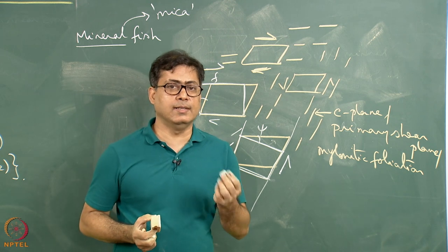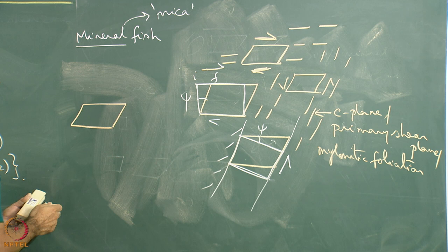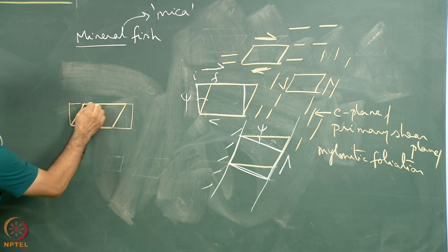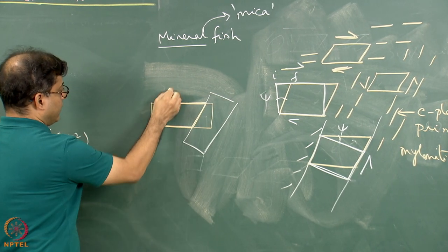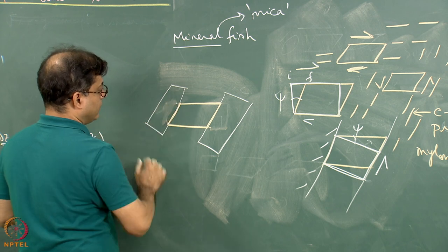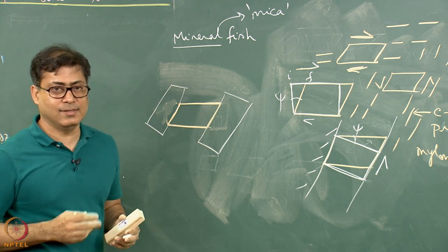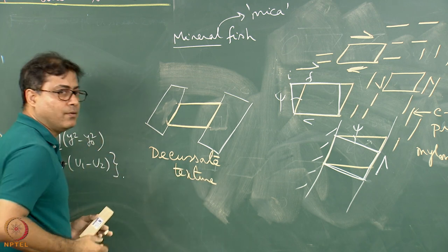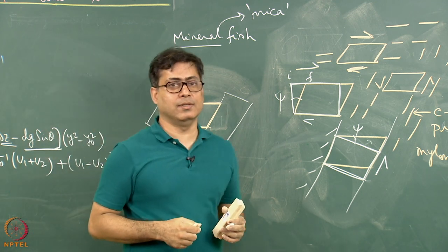Once you see a parallelogram-shaped grain in thin section, beginners sometimes commit a mistake. Suppose there is a parallelogram-shaped grain in an aggregate of minerals, but another grain — say a rectangular grain — has grown on top of it, cutting across it. We are then getting an apparent parallelogram geometry. Is this parallelogram indicating any ductile shear sense? The answer is no. Do not pick up such parallelogram grains from the decussate texture — that is a haphazard growth of mineral, and we must exclude such parallelogram geometries when finding the shear sense.